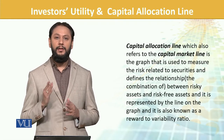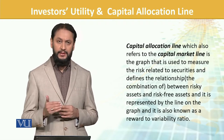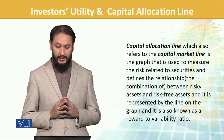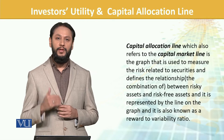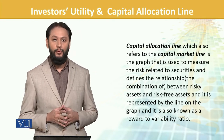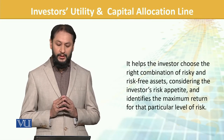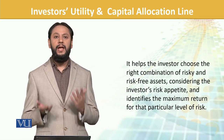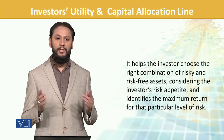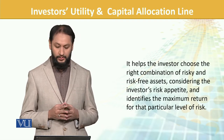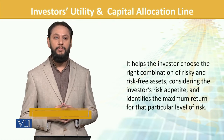Here the key point is that we are not talking about risky alone, but about the combination of risky and risk-free assets — that is the CAL or CML line. It is also known as the reward-to-variability ratio: for the variability we have taken, what reward are we capturing.